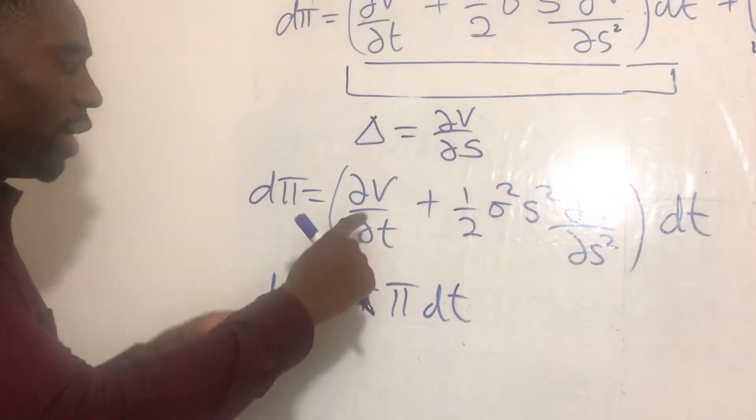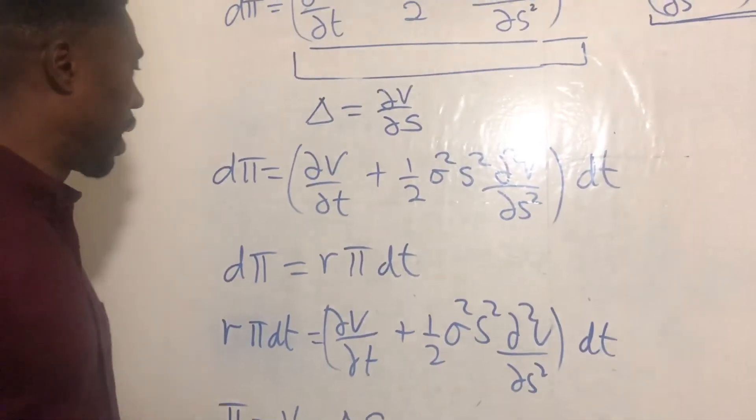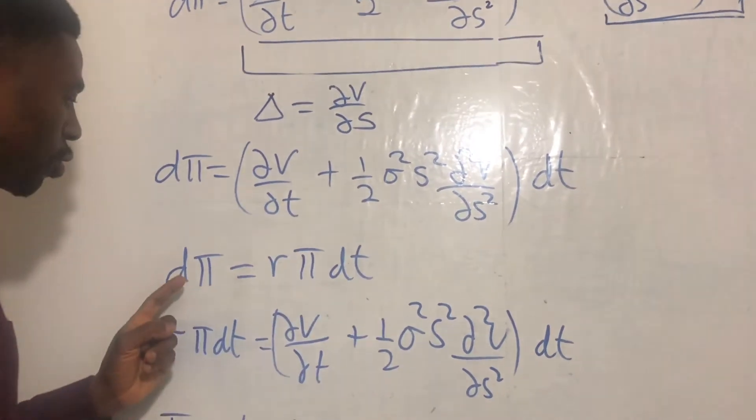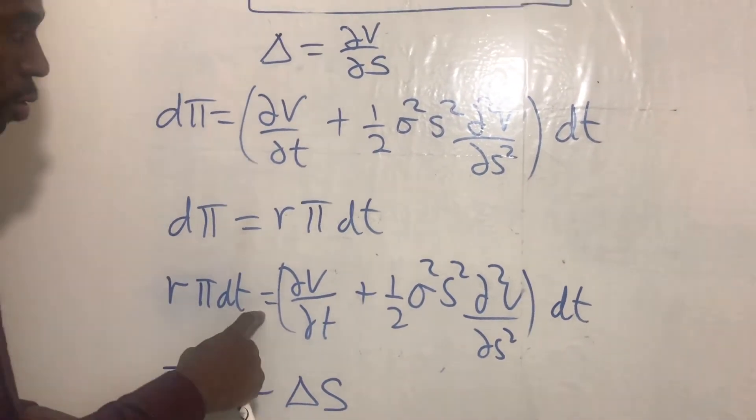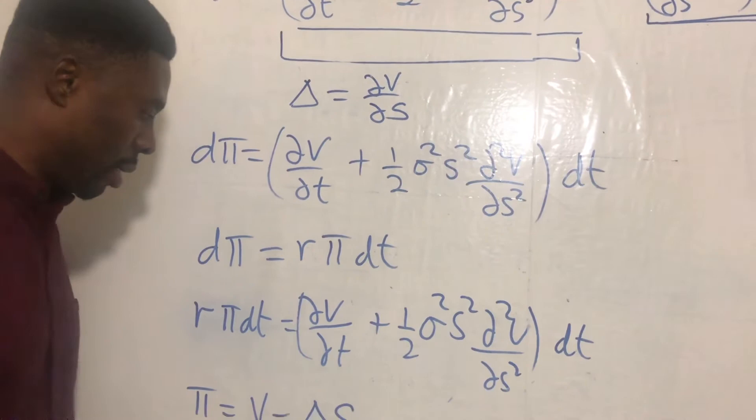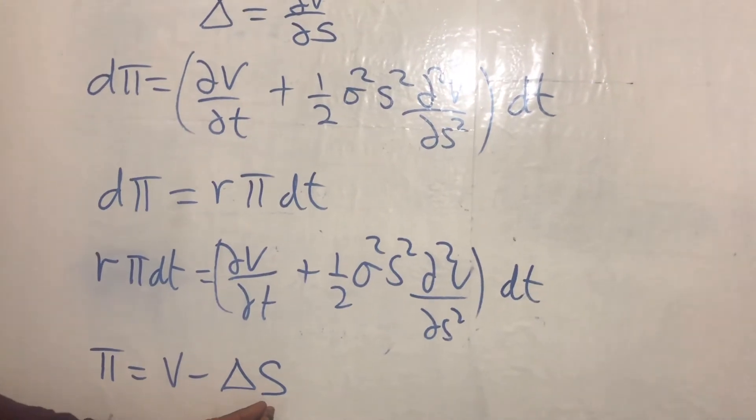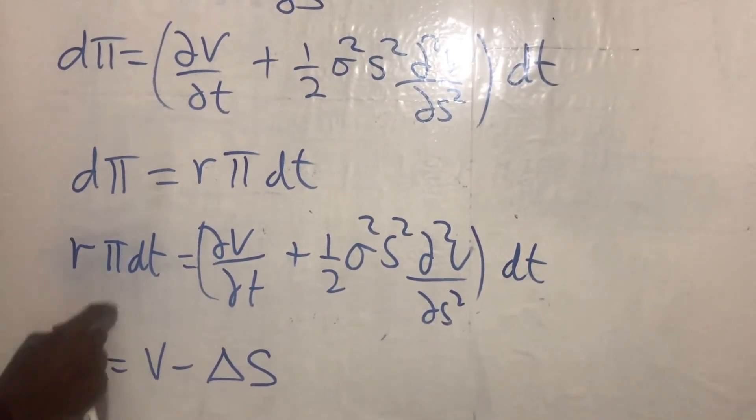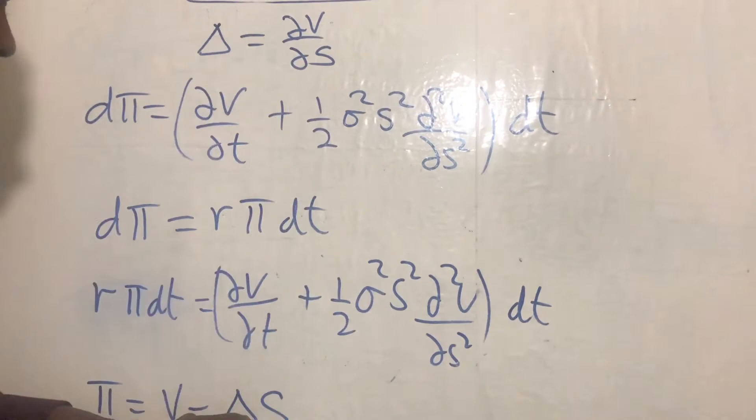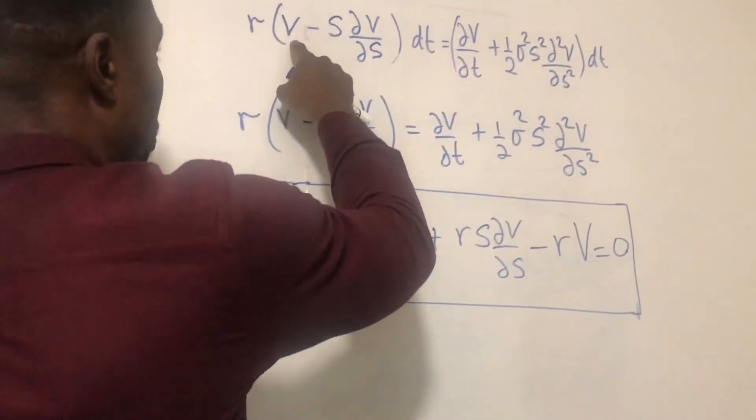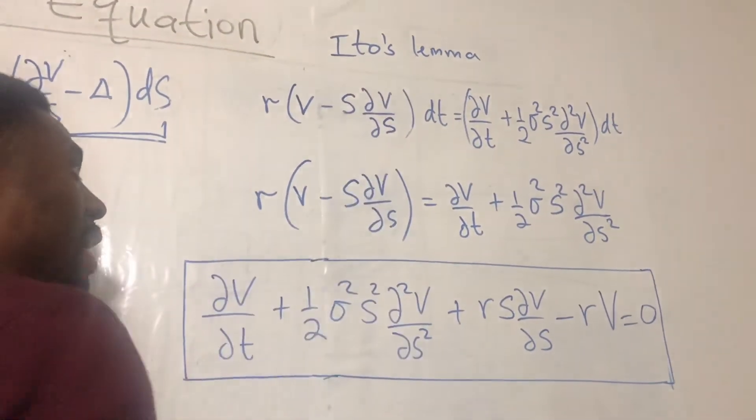So from here, we can equate these two and also make a few substitutions with π. So we've got dπ equals that and we also got dπ equals that. So therefore, we can equate these two bits here. So we have rπ dt equals all of that bit in the bracket. Here, we divide both sides by dt to cancel the dt. But we know that π is given as V minus delta S. That's the portfolio. So we substitute π in here and also delta. We know delta was ∂V/∂S. So we are going to substitute delta in here.